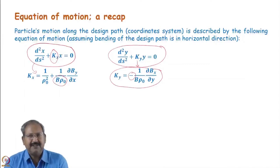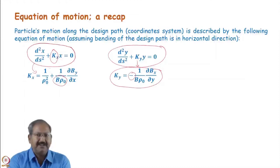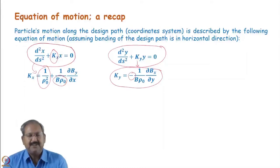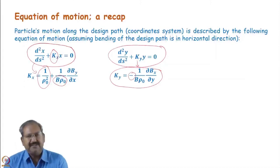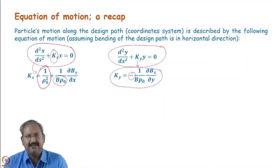So in the horizontal plane, if the gradient is providing focusing, then in the vertical plane this gradient will provide defocusing — which we have seen during the study of the quadrupole magnet. In the horizontal plane, there is also an additional term of 1/ρ². This appears because we assume that bending takes place in the horizontal plane, meaning the design trajectory is completely in the horizontal plane. Under this assumption, 1/ρ² appears only in the horizontal equation of motion.